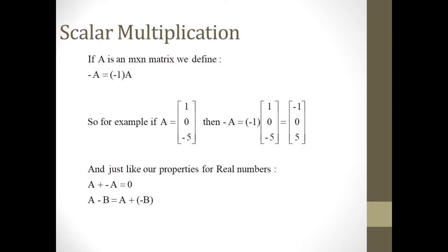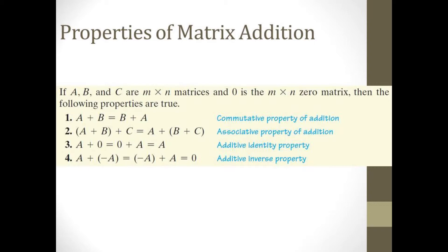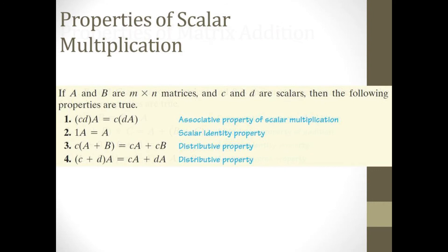Just like with regular variables, a matrix with a minus in front of it means negative 1 times the matrix, which means multiplying the scalar negative 1 times every element. Given this interpretation, we have patterns very similar to real numbers. For any matrix A, A plus negative A equals the zero matrix, and matrix subtraction A minus B is the same as A plus negative B. Matrix addition is commutative, associative, the zero matrix acts as identity, and every matrix A has an additive inverse negative A.